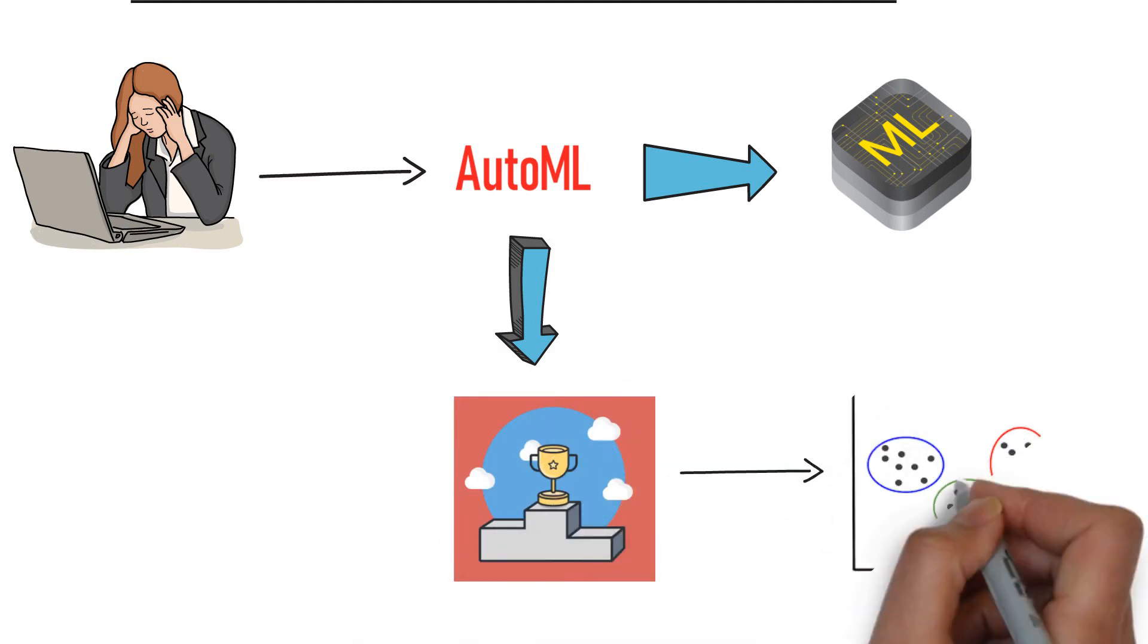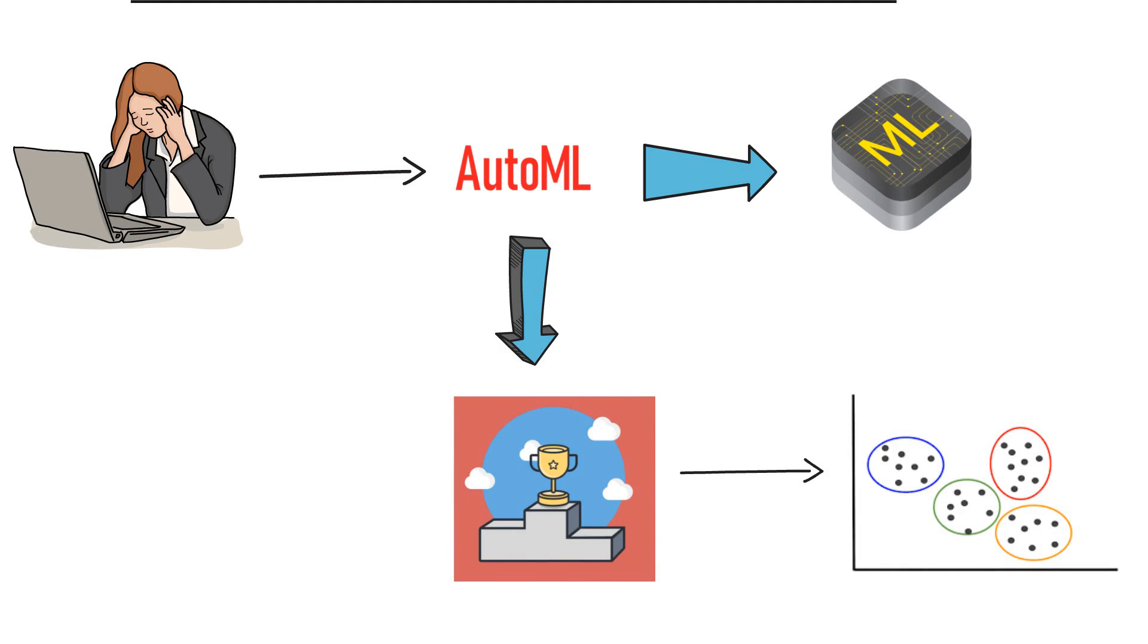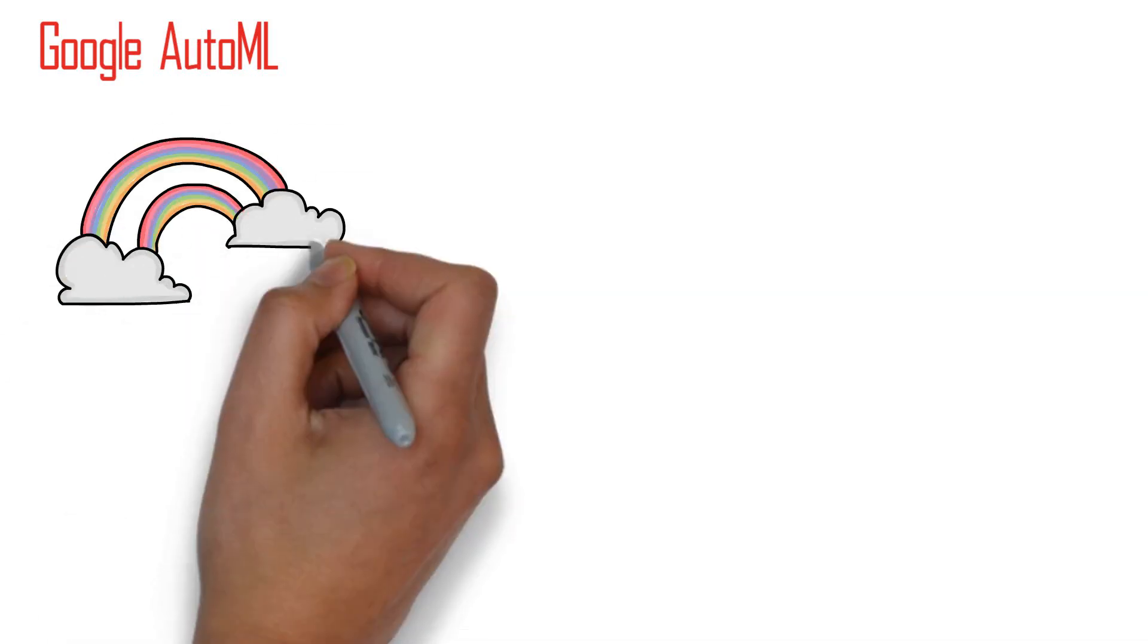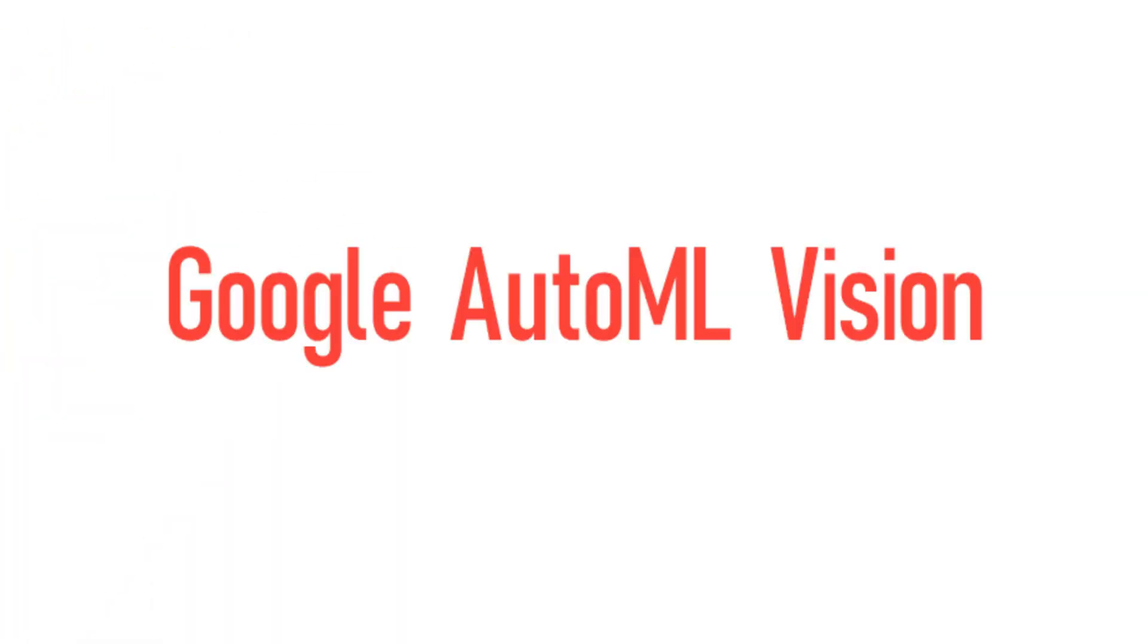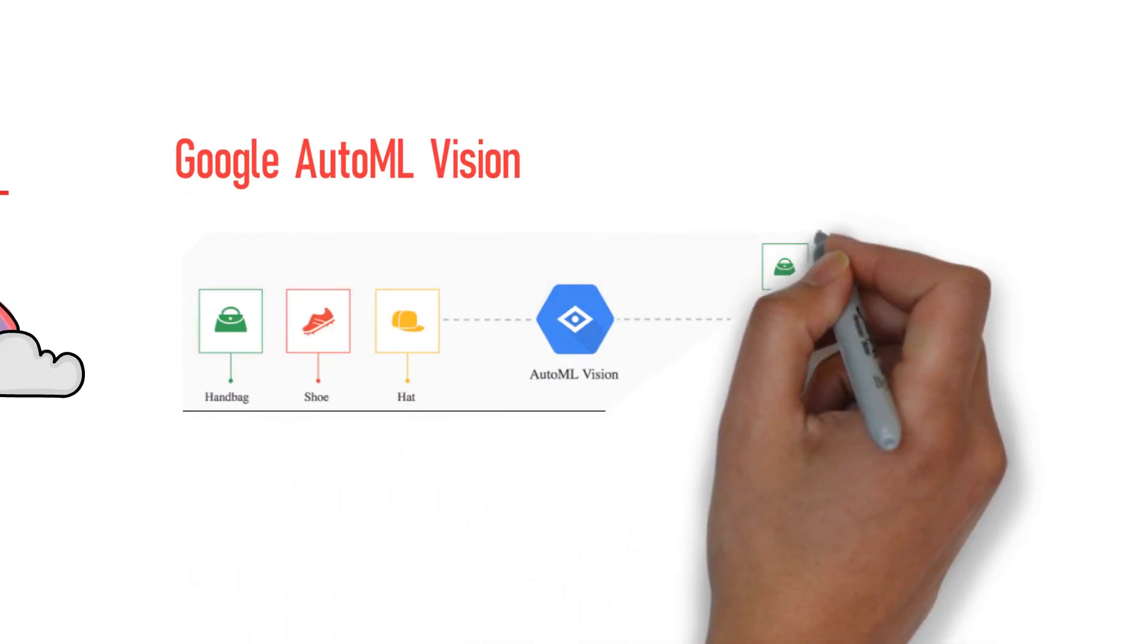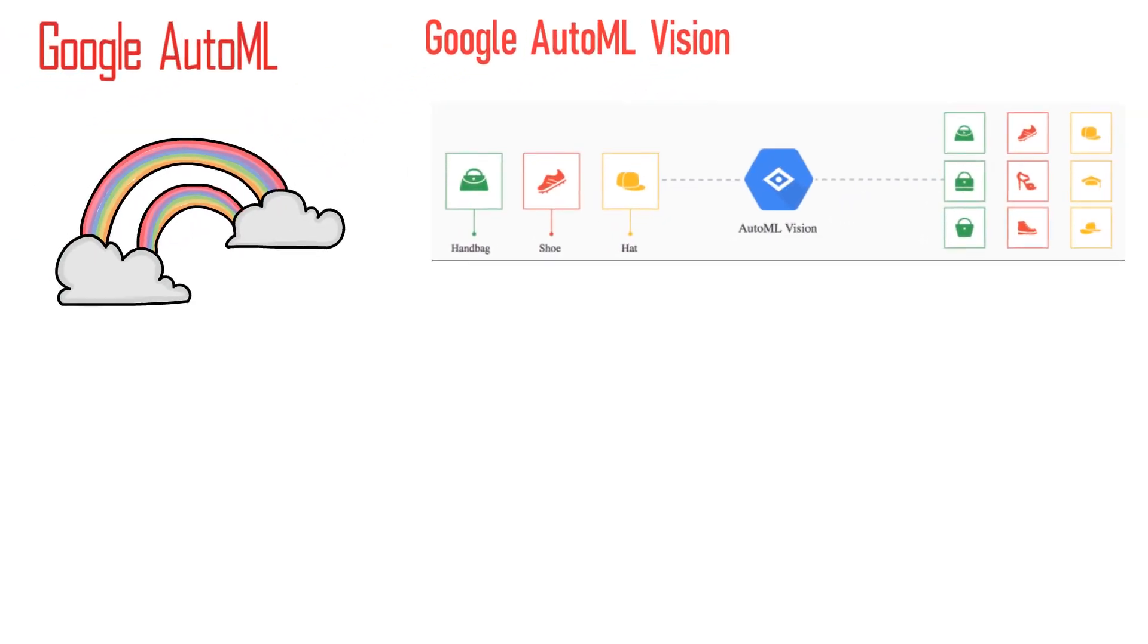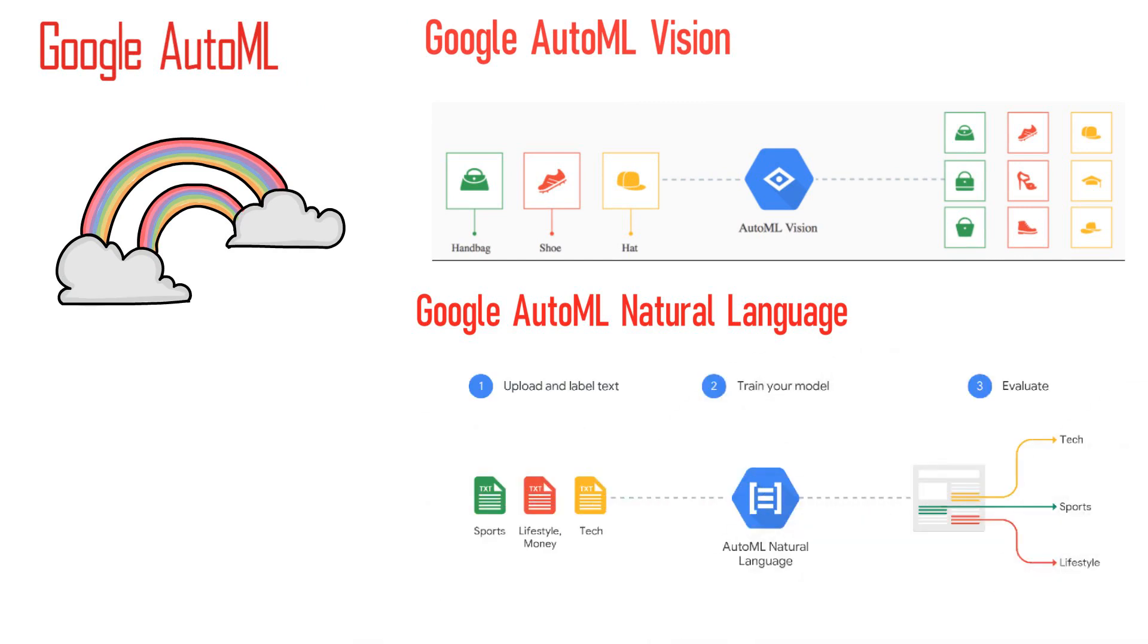Let's check some AutoML frameworks. Google's AutoML. Google has launched many AutoML products on its cloud platform. For images, it has launched AutoML Vision. If you want to deal with text, then Google has AutoML Natural Language.